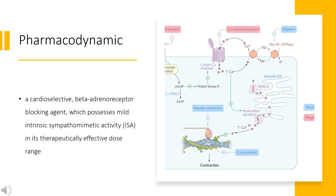Pharmacodynamics: Acebutolol is a cardioselective beta-adrenoreceptor blocking agent, which possesses mild intrinsic sympathomimetic activity (ISA) in its therapeutically effective dose range. In general, beta-blockers reduce the work the heart has to do and allow it to beat more regularly. Acebutolol has less antagonistic effects on peripheral vascular beta-2 receptors at rest and after epinephrine stimulation than non-selective beta antagonists. Low doses of acebutolol produce less bronchoconstriction than non-selective agents like propranolol, but more than atenolol.